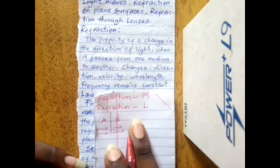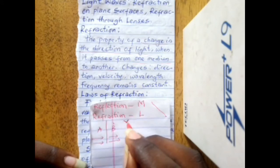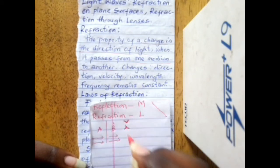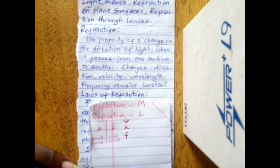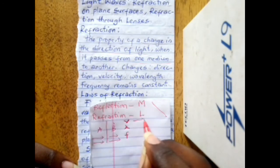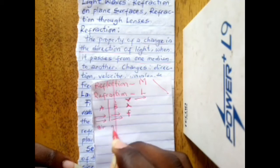As light moves from medium A to medium B, certain characteristics of the light wave will change. These include the velocity of the light wave, the wavelength of the light wave, and the frequency of the light wave. Moving from one medium to another, we will have a change in direction and a change in velocity. For example, consider air and glass.